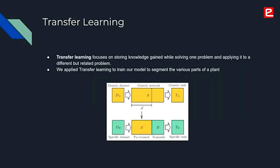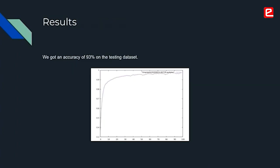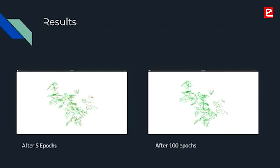To train our model, we made use of an approach called transfer learning, where a model is trained on a vast generic dataset and the weights are later used to fit the needs of the model. We were able to show an accuracy of 93% on the testing dataset. In these two point clouds, green indicates that the model predicted those points correctly and red indicates that it was unable to do so. After 5 epochs there were a lot of wrong predictions, but after 100 epochs it was able to predict the points much more accurately.